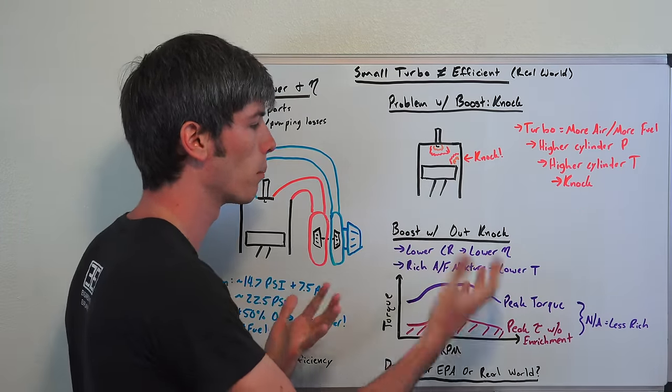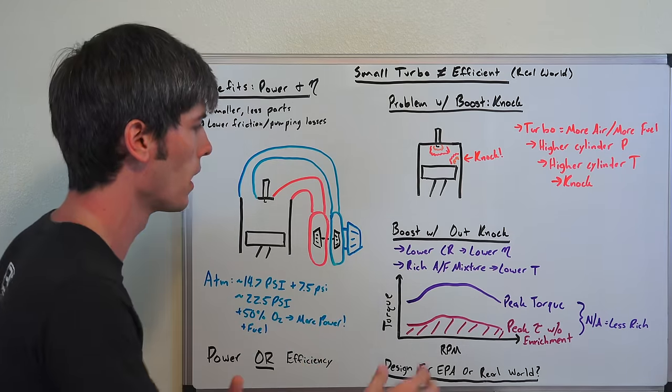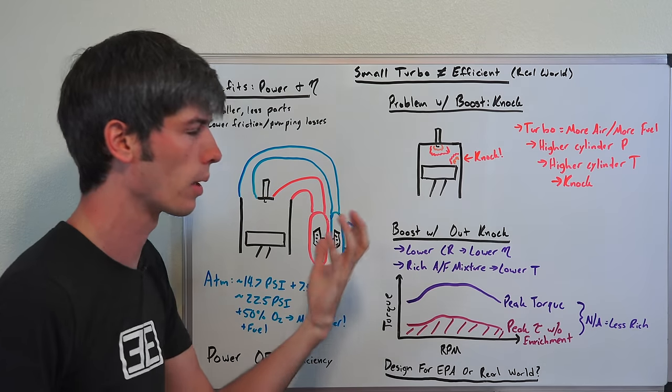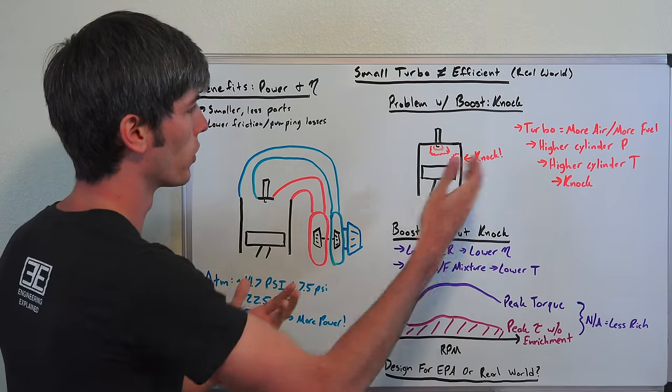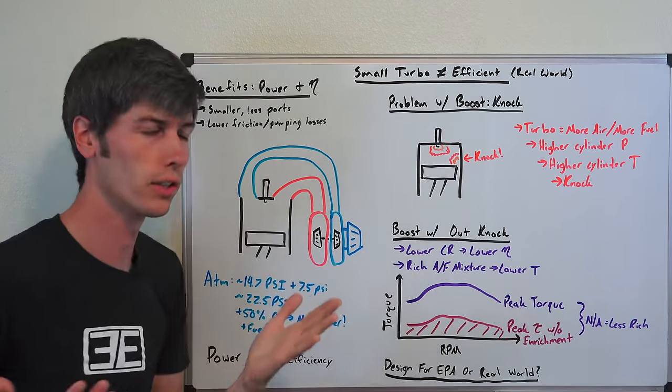You can retard the ignition timing, but that means you're not going to be as efficient, you're not going to make as much power. You can lower the compression ratio, which also means less power overall and lower efficiency. But you will often notice that turbocharged engines use significantly lower compression ratios than other style engines, and that's to help reduce the likelihood of having knock, and that in itself makes the engine less efficient.